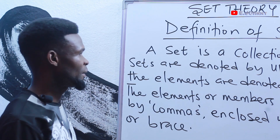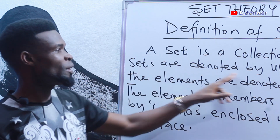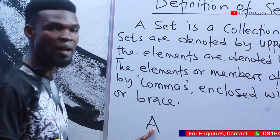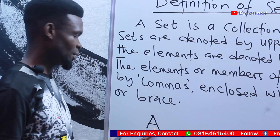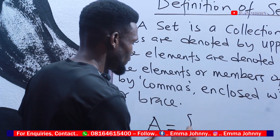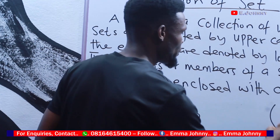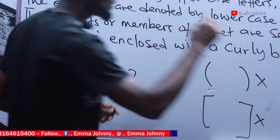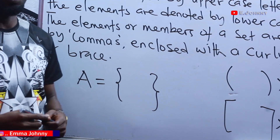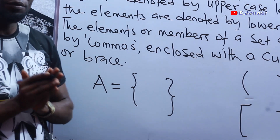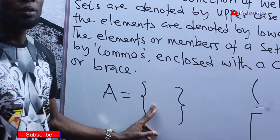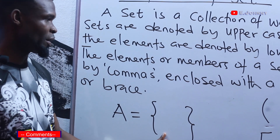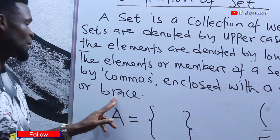Sets are denoted by capital letters. For example, I can say this is set A. None of the round or square brackets are acceptable in set notation — the only acceptable bracket is the curly bracket, also called the brace.